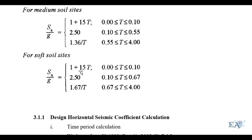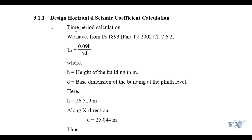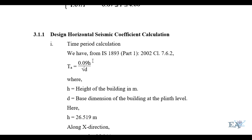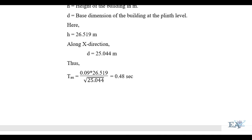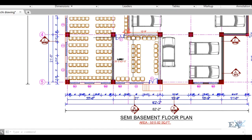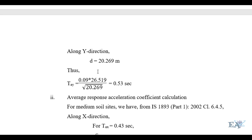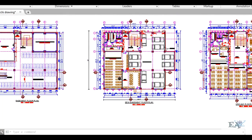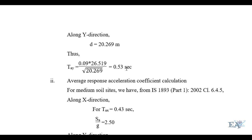This is how AH is calculated, and once you have AH and W, you can calculate the base shear. Now let me go through a numerical example. The height of the building H is 26.519 m. The base dimension D in the X direction is 25.044 m, giving TAx = 0.48 seconds. In the Y direction, D is 2.269 m, giving TAy = 0.53 seconds.